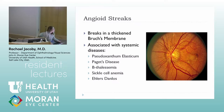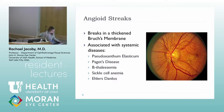If you're diagnosing angioid streaks for the first time, it's important to do a systemic workup because they have systemic comorbidities. The most common association I've seen is pseudo xanthoma elasticum. Another retinal finding with pseudo xanthoma elasticum is this orange peel appearance, typically seen in the temporal macula. You can also see angioid streaks with Paget's disease, beta thalassemia, sickle cell, and Ehlers-Danlos syndrome.